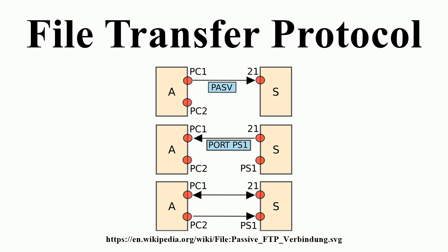In situations where the client is behind a firewall and unable to accept incoming TCP connections, passive mode may be used. In this mode, the client uses the control connection to send a PASV command to the server and then receives a server IP address and port number, which the client uses to open a data connection from an arbitrary client port to the server. Both modes were updated in September 1998 to support IPv6, and passive mode was further updated to extended passive mode at that time.